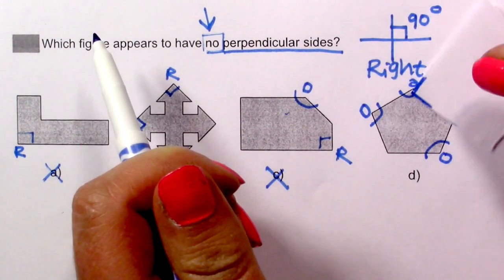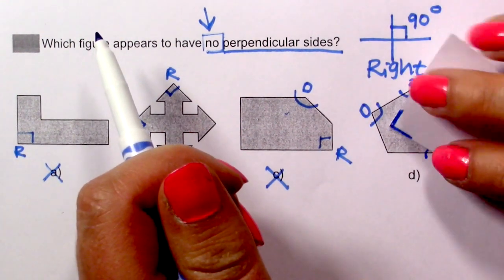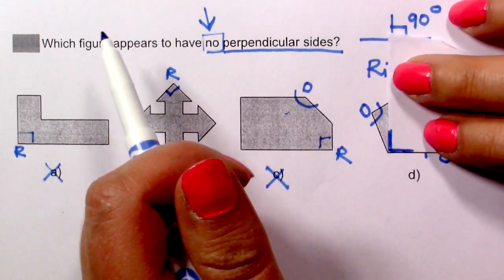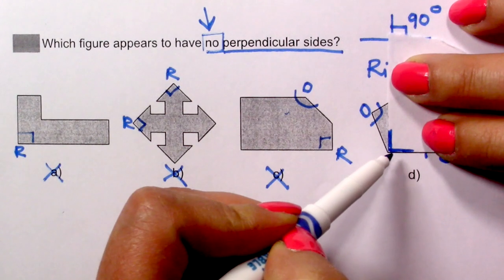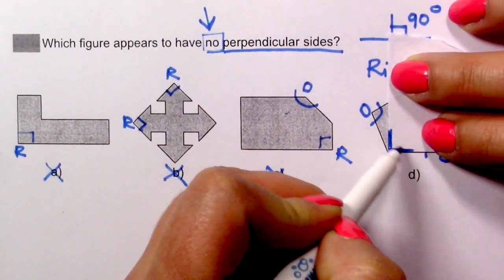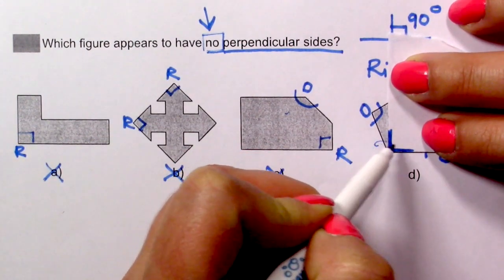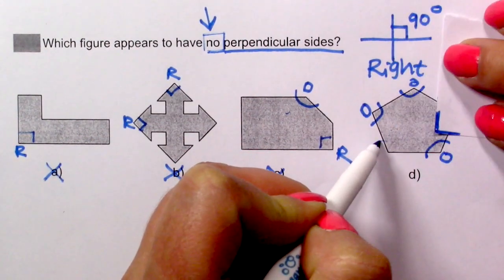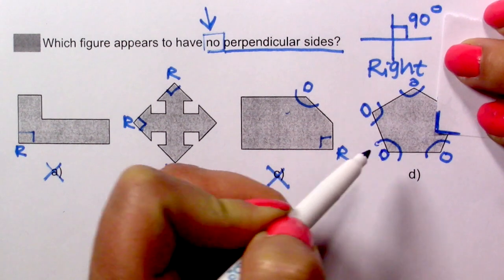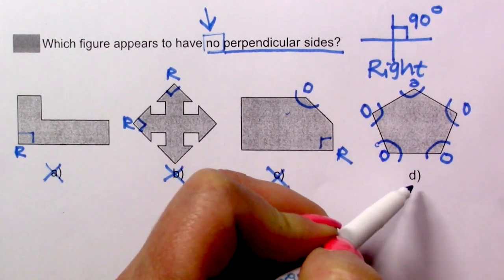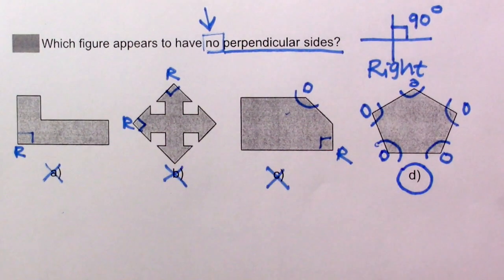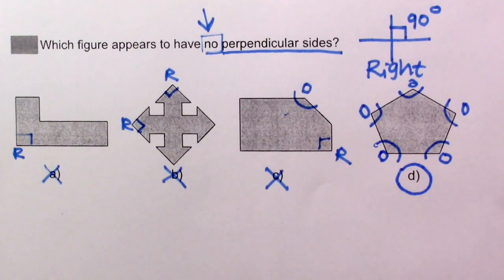And the last angle — line with line, vertex with vertex — you can see that this is also an obtuse angle. So this is our answer.